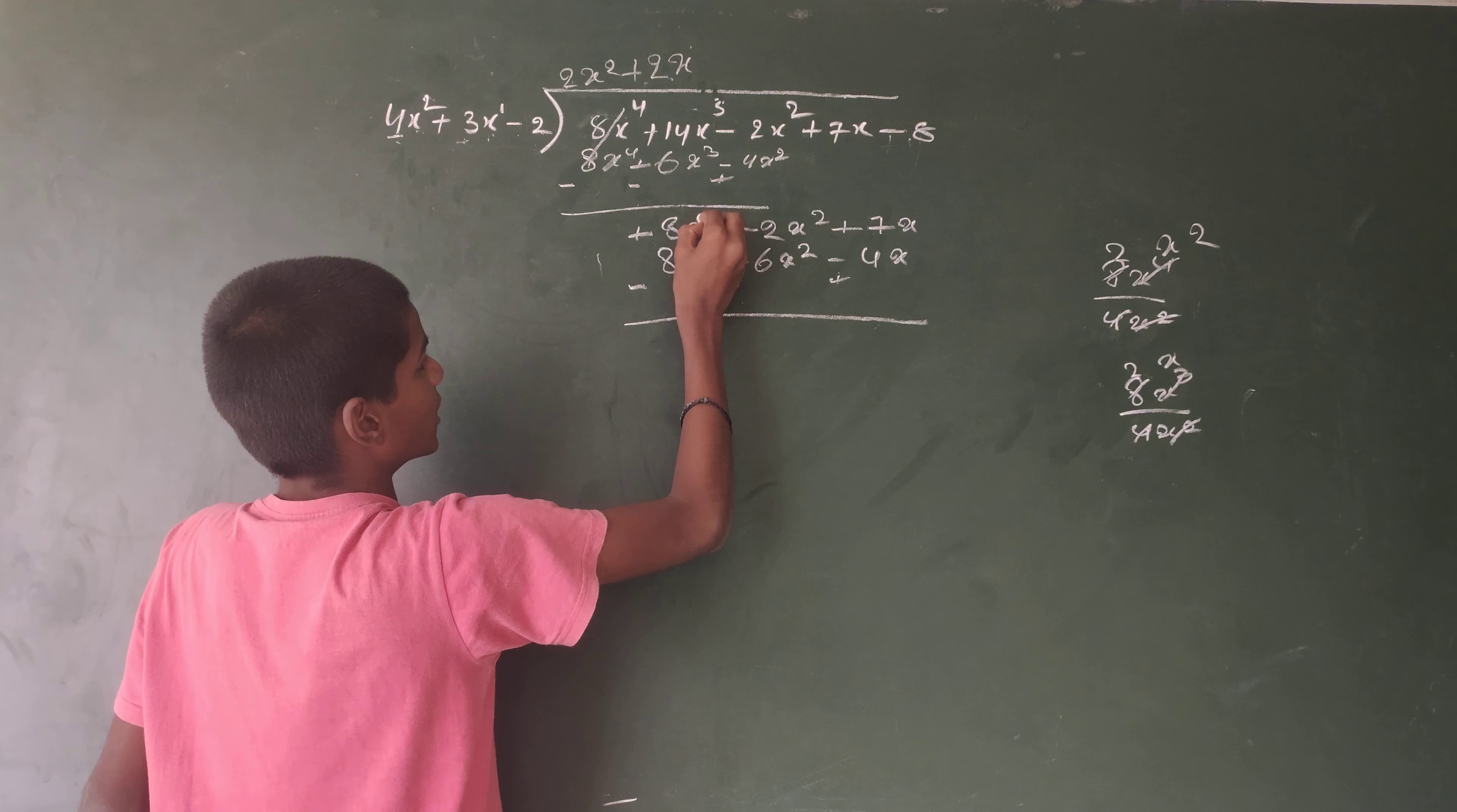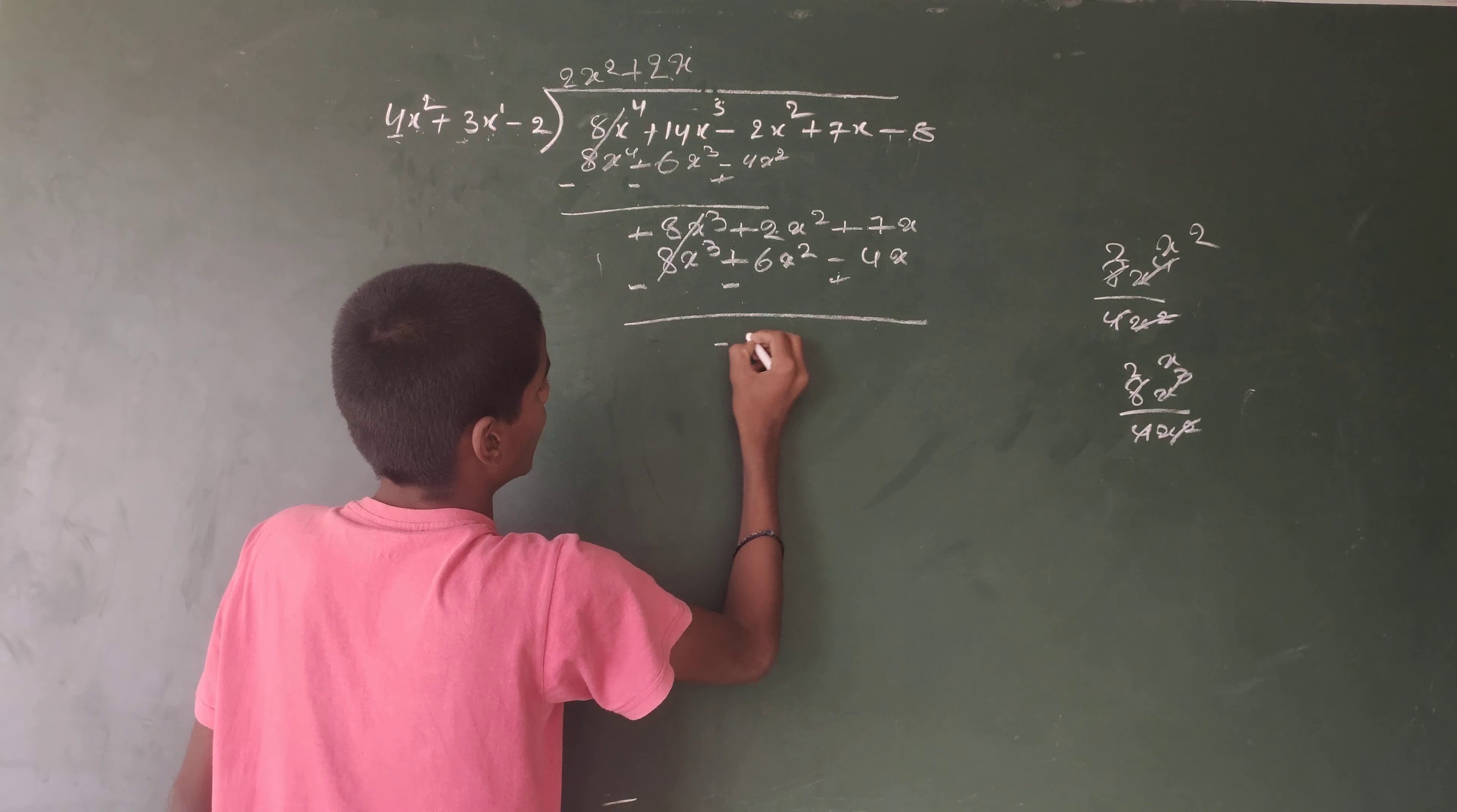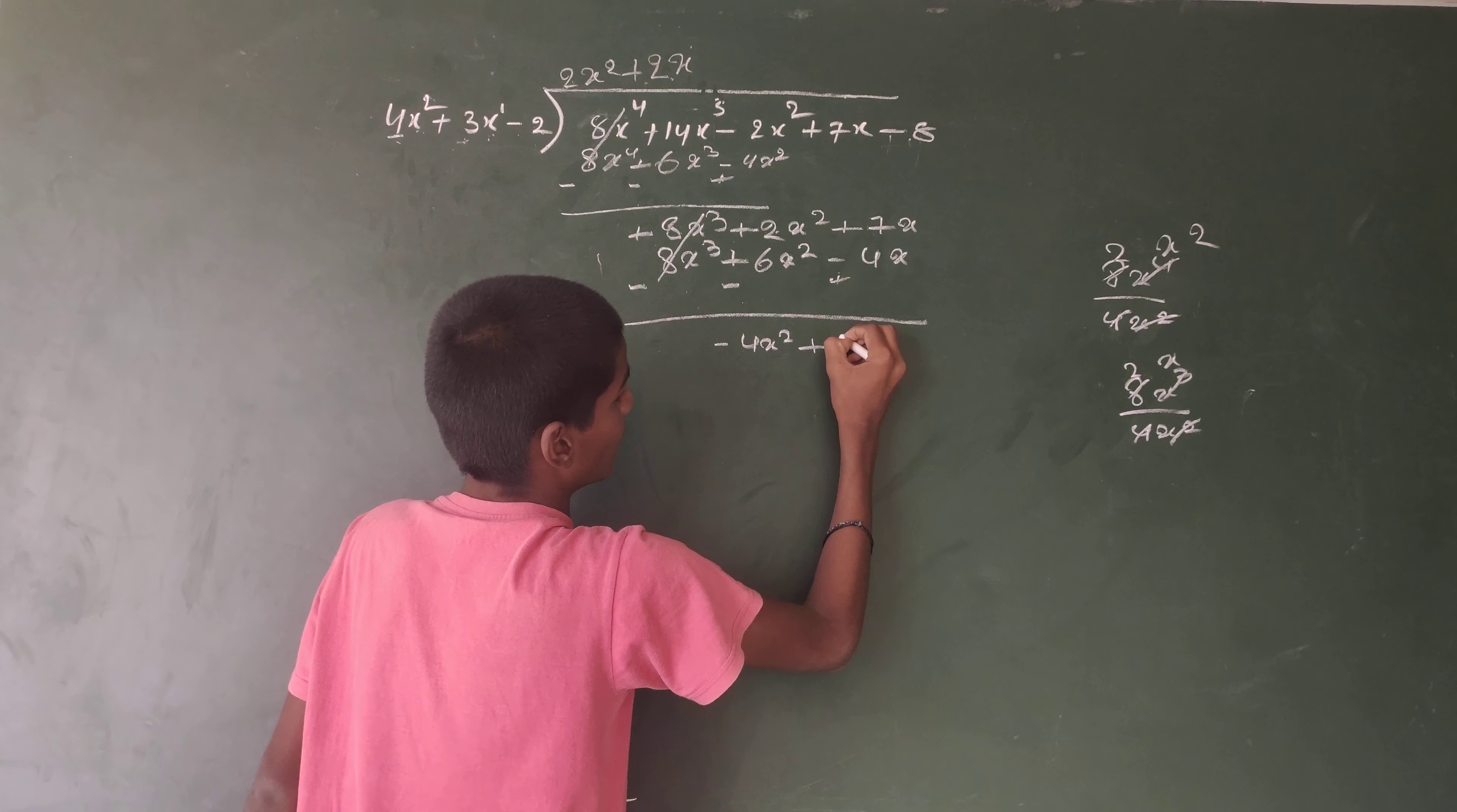Plus 8x³ minus 8x³ cancel. Plus 2x² minus 6x² minus 4x² equals minus 4x². Plus 4x plus 11x equals plus 11x.